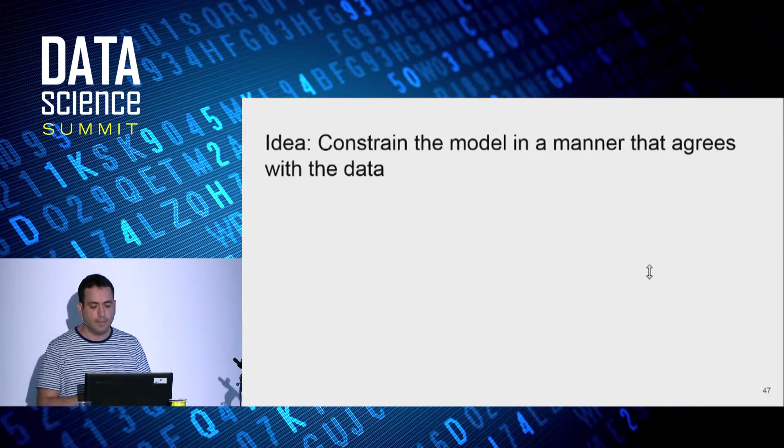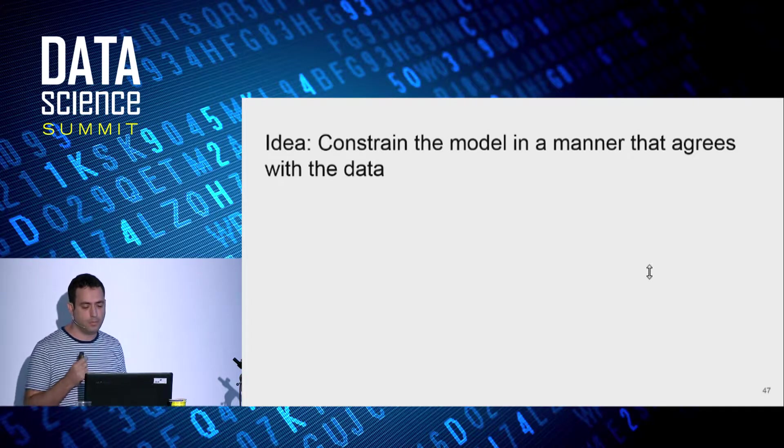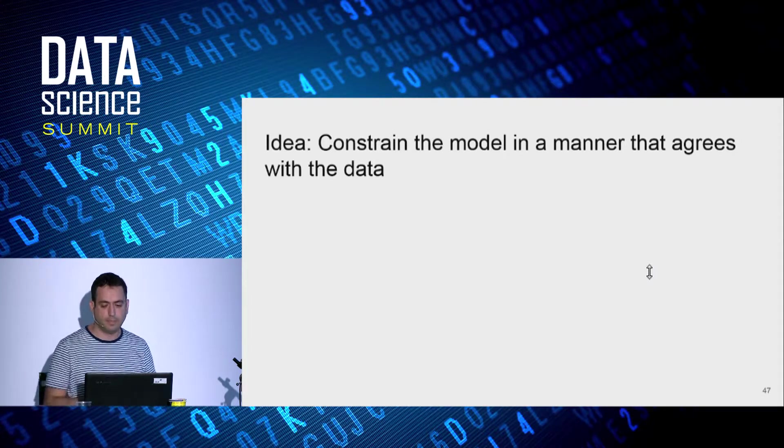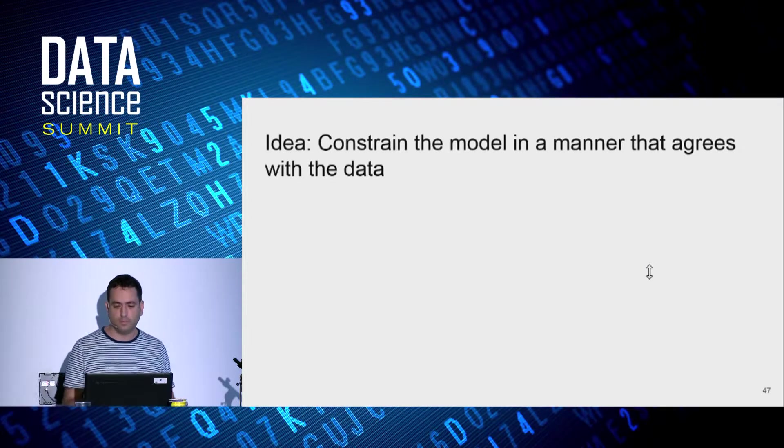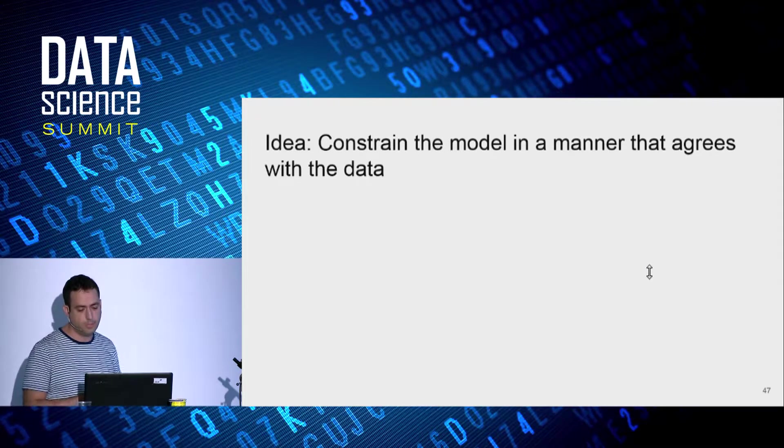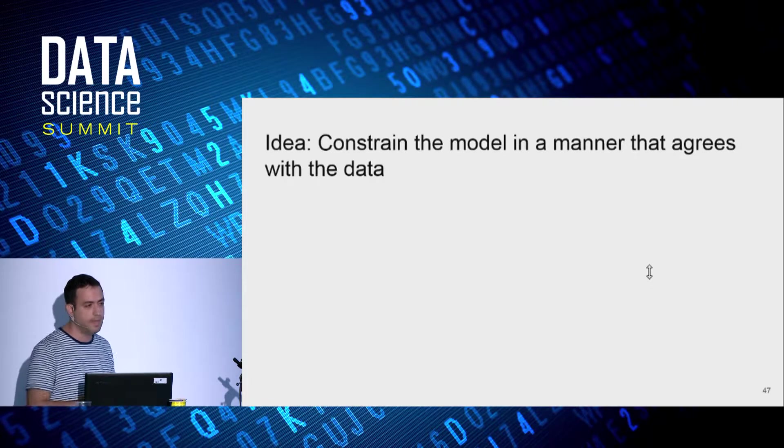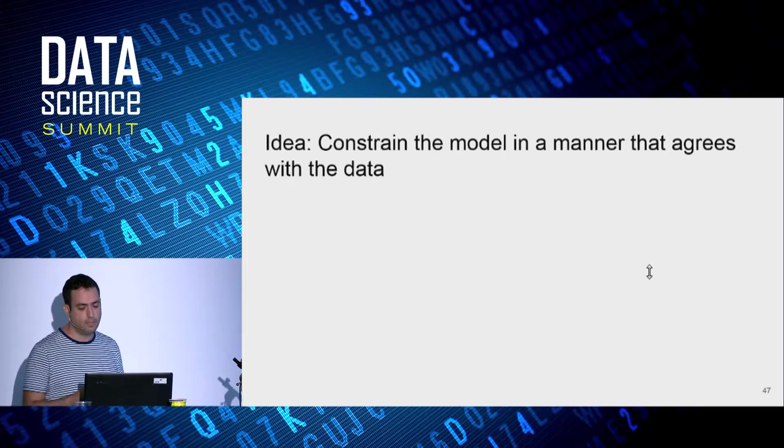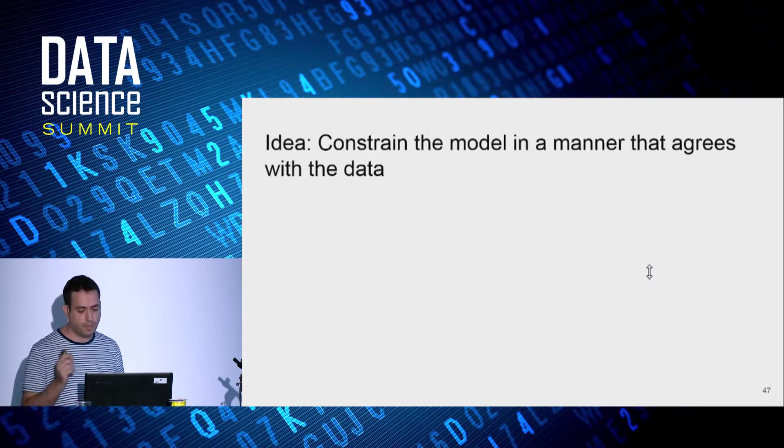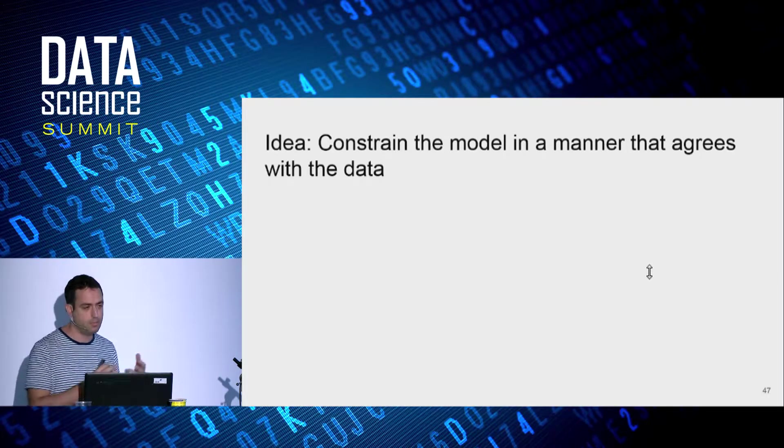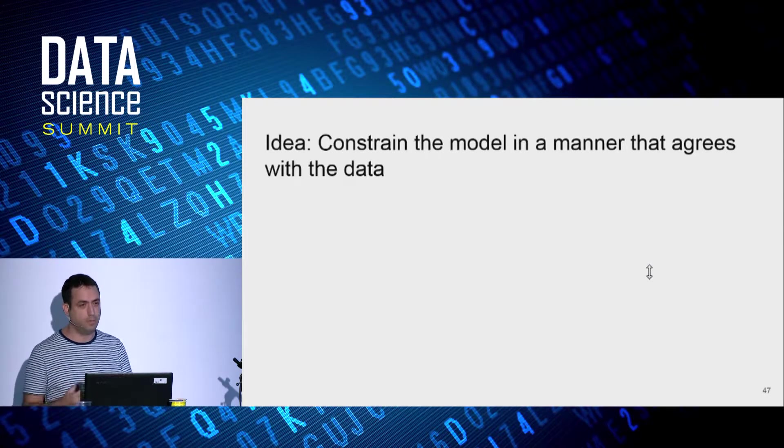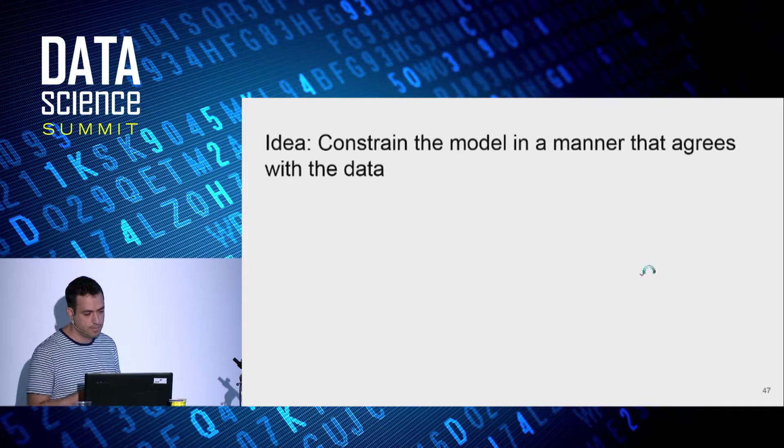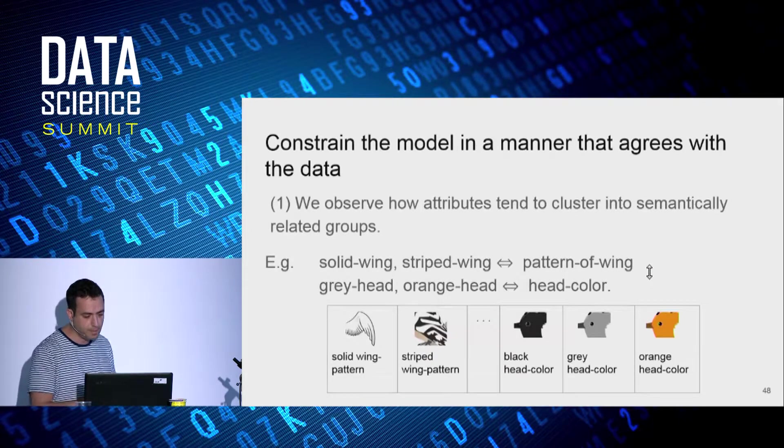And the idea behind our approach is that we would like to constrain the model in a manner that agrees with the data. Now, the question is, what kind of assumptions on the distribution of the data would be natural for the model? And many times, this is the challenge for machine learning, choosing a family of models that has the right inductive bias, which is not too simple, which can underfit the data, but not too general, which can overfit.